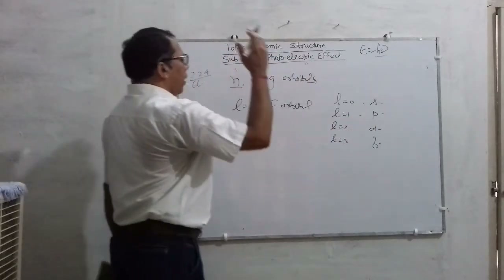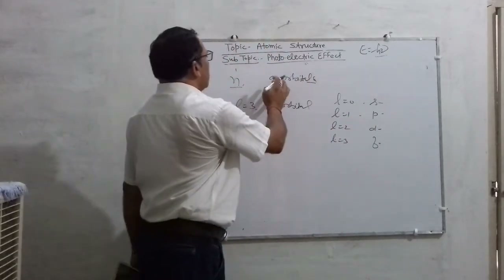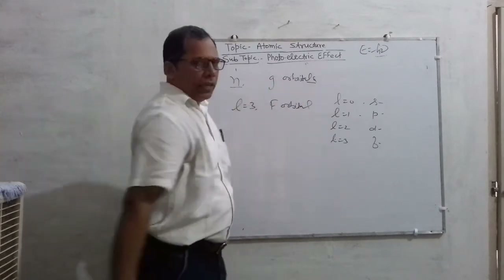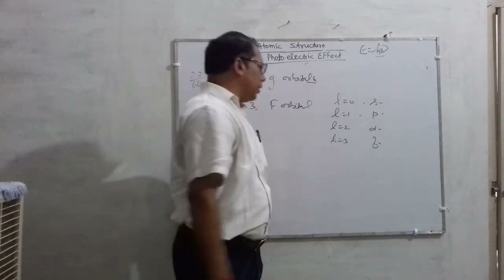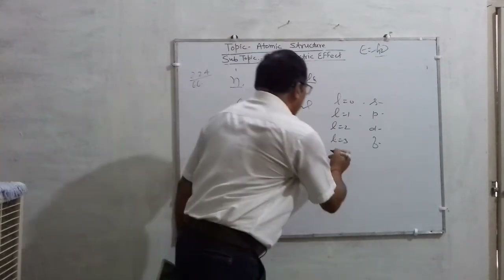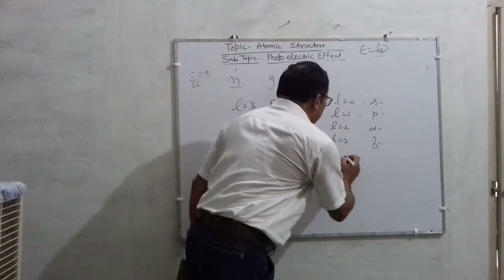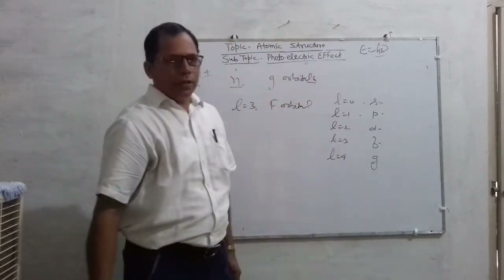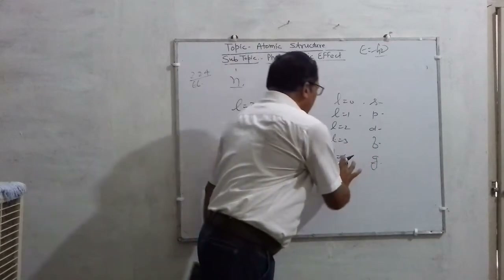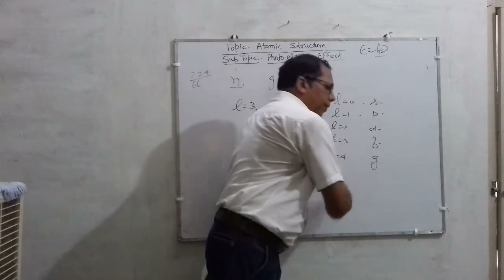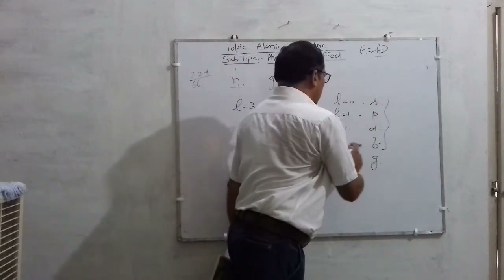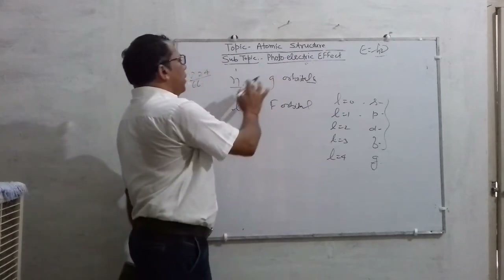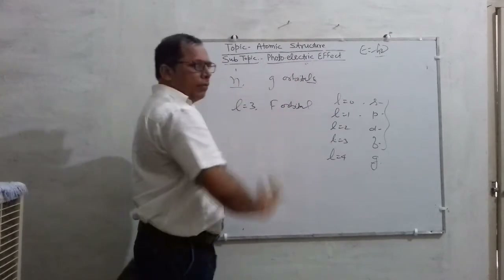The question is: for which value of N will G orbital exist? Similarly, if the value of L is equal to 4, then G orbital will exist. For which value of N will G orbital exist? Go on the same basis.